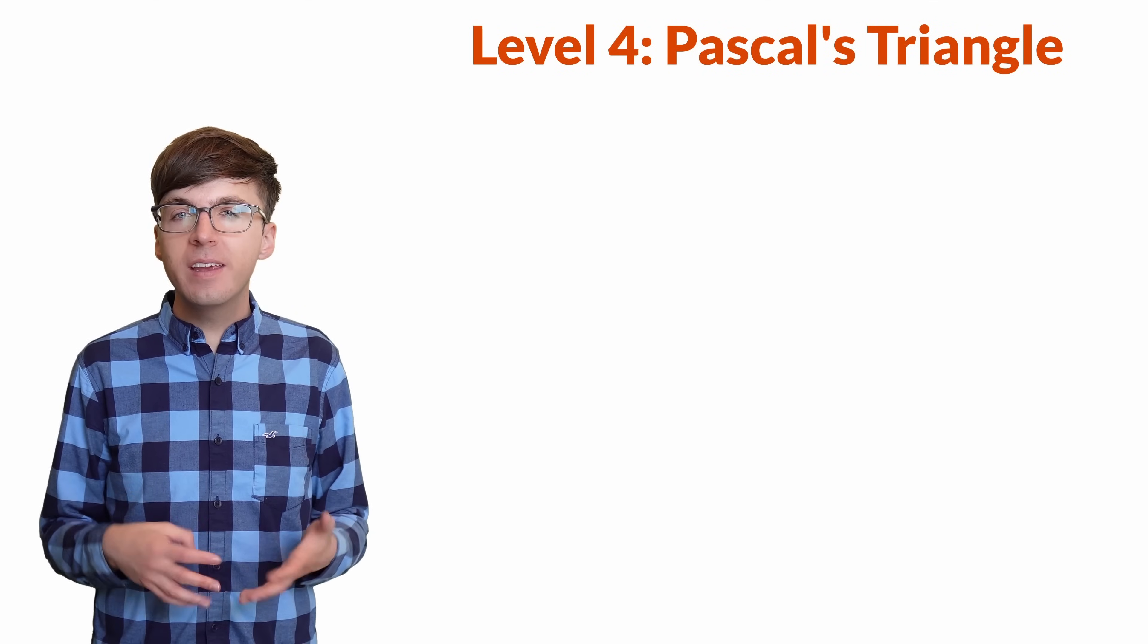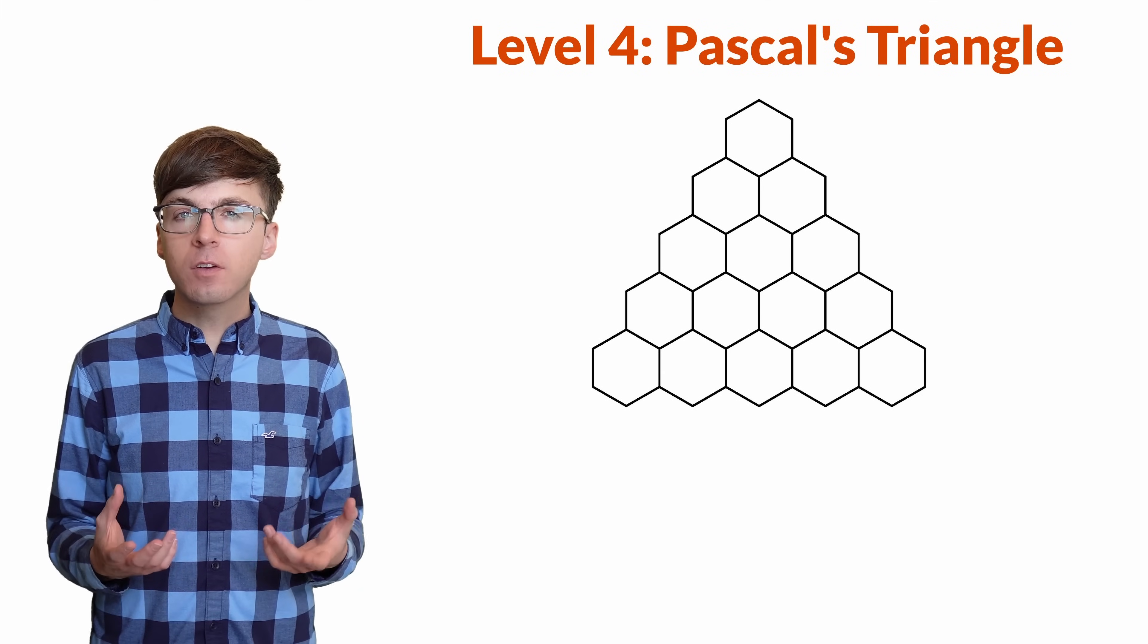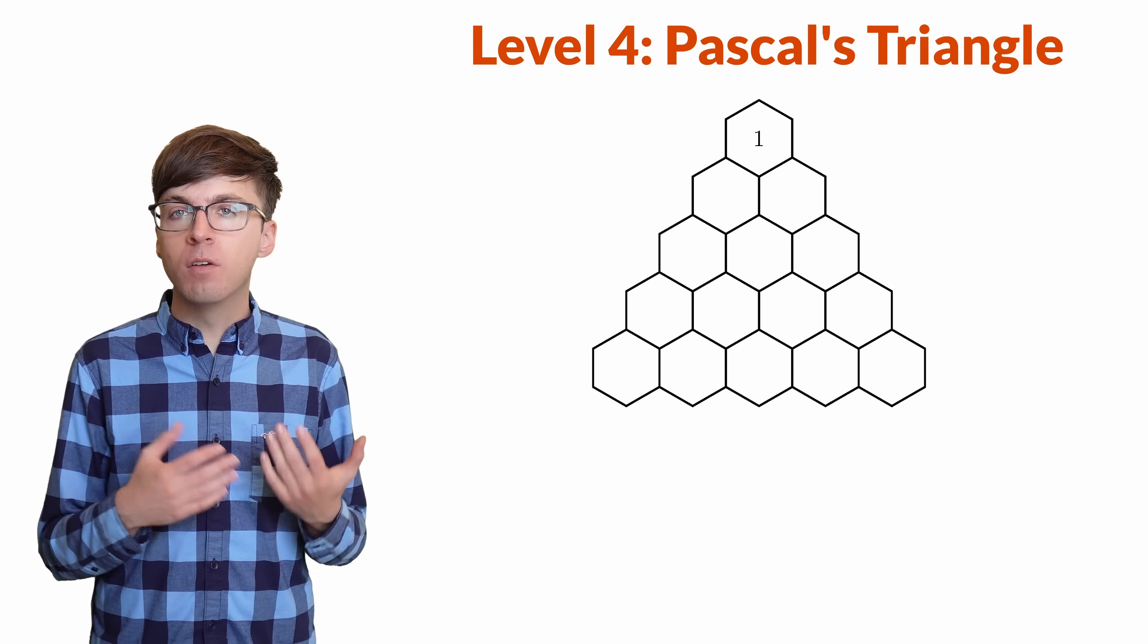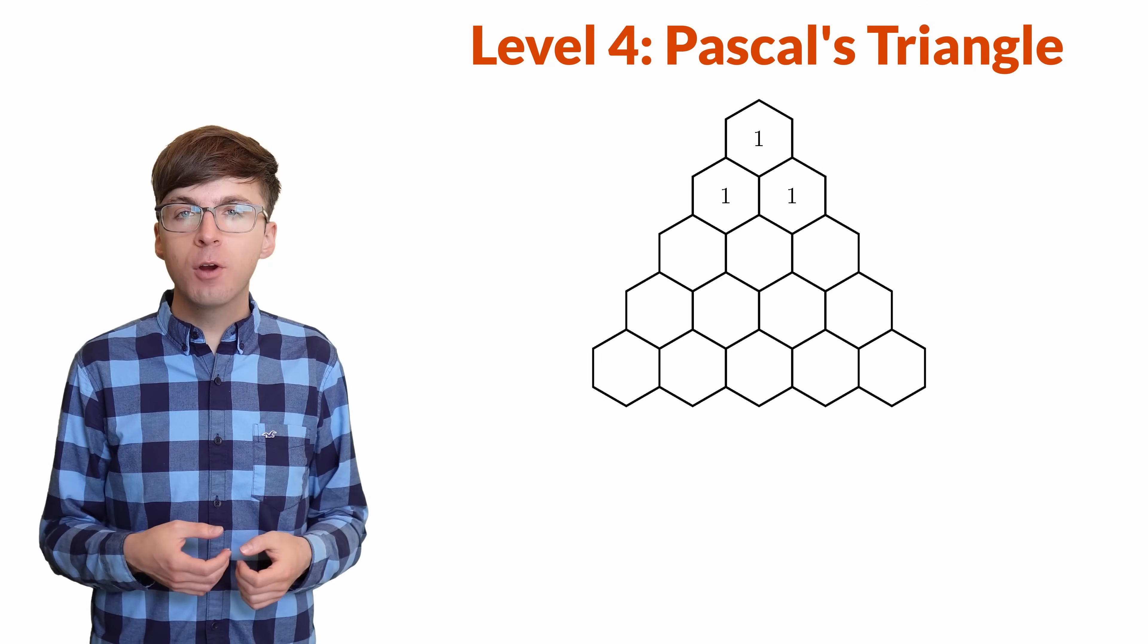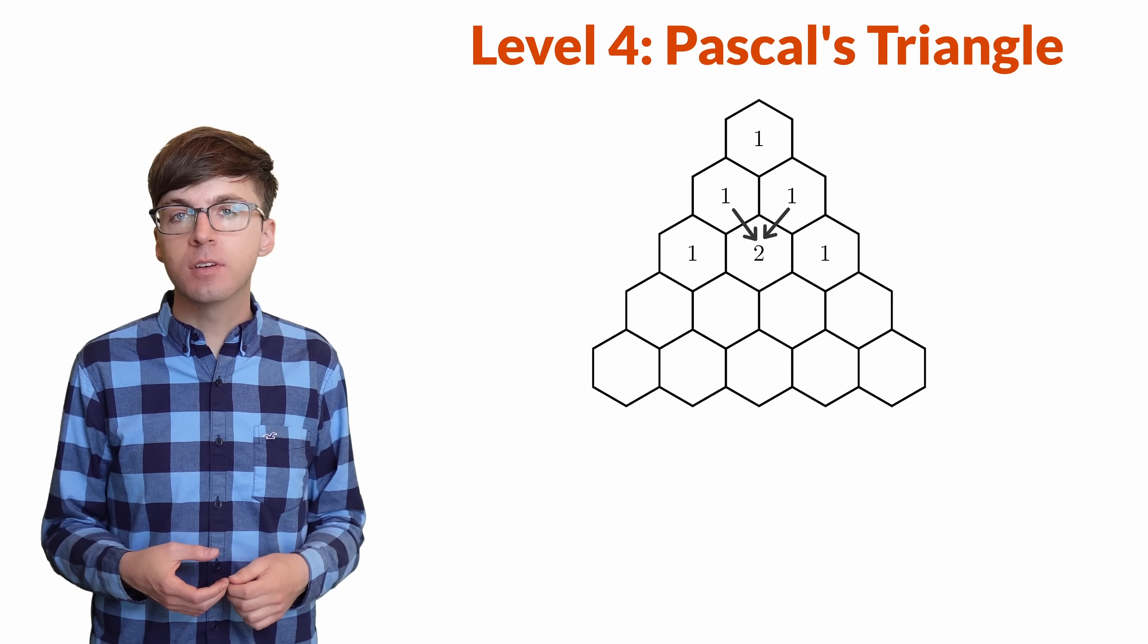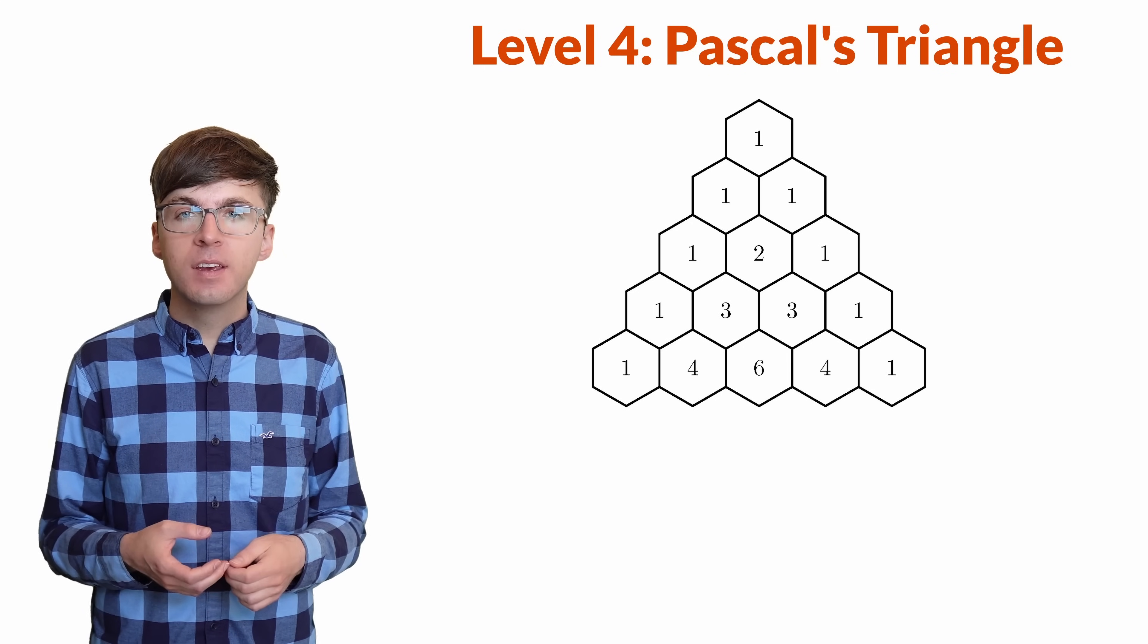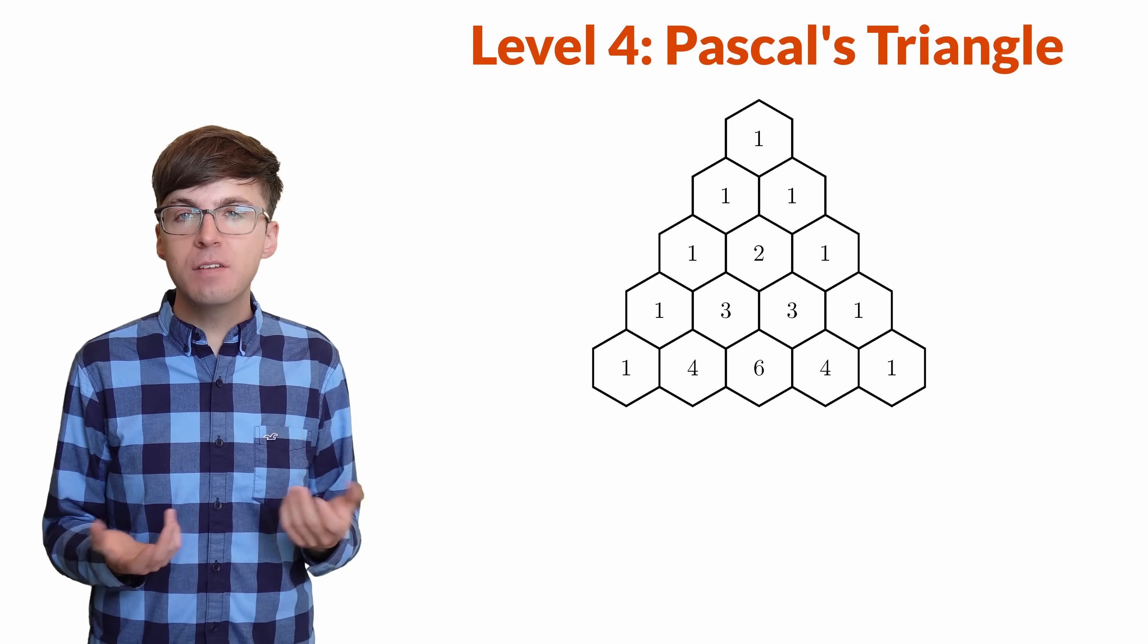For level 4, let's see how E is hidden in Pascal's Triangle. Pascal's Triangle starts with a row of 1, and then a row of 1, 1. For the following rows, each value is found by adding the two values above each position. We can imagine there are zeros beyond the edge of the triangle. So how could we possibly get E from this?